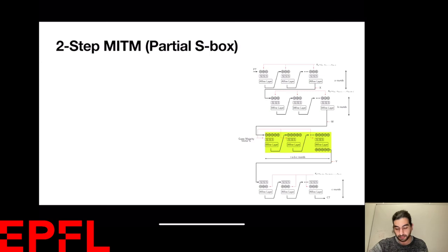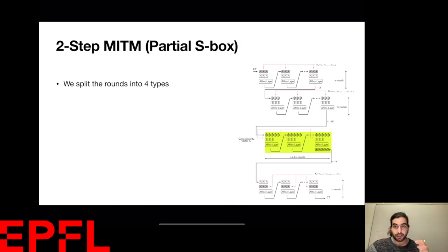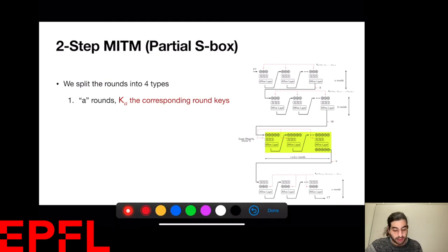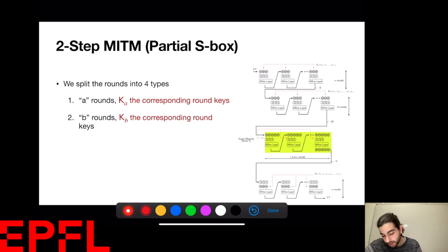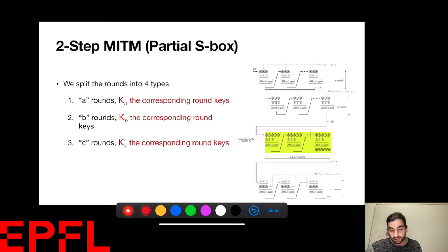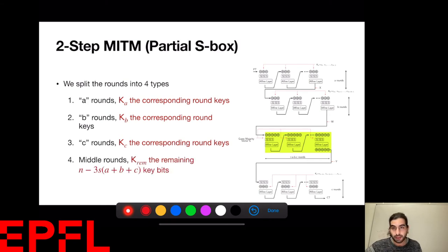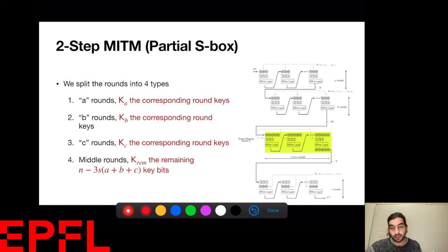Now let's talk about the partial layer variant. I divide the rounds into four distinct types: A rounds at the beginning with key bits Ka, B rounds following with key bits KB, C rounds at the end with key bits KC, and middle rounds which I linearize. The remaining key entropy from these three round keys is K_rem, which is N − 3S(A + B + C) bits.